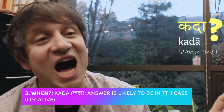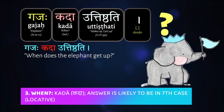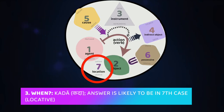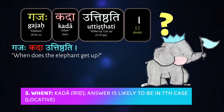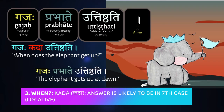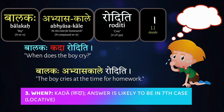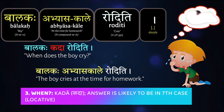To ask when something happens, you use the K-word kadā. So you can ask 'Gajaḥ kadā uttiṣṭhati' — when does the elephant wake up? 'Bālakaḥ kadā roditi' — when is the boy crying? The answer will probably be in the locative case. 'Gajaḥ prabhāte uttiṣṭhati' — the elephant wakes up in the early morning. 'Bālakaḥ abhyāsakāle roditi' — the boy cries when it's time to do homework.